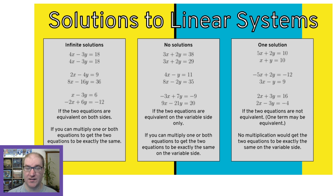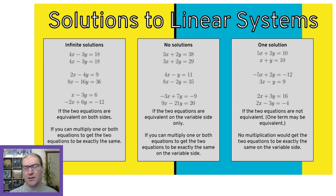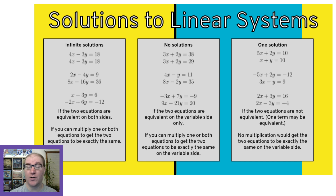Then we jump to the middle box that says no solutions. Sometimes you're going to get linear systems that have no solution. When graphing them, it's because the two lines are never going to intersect — they're going to be parallel to each other. If we solve them algebraically, you'll notice 3x plus 2y equals 38 and 3x plus 2y equals 29. That's not going to have a solution because how can 3x plus 2y equal 38 in one equation but 29 in the other? So if you get two equations that are equivalent on the variable side only, that's not going to have solutions.